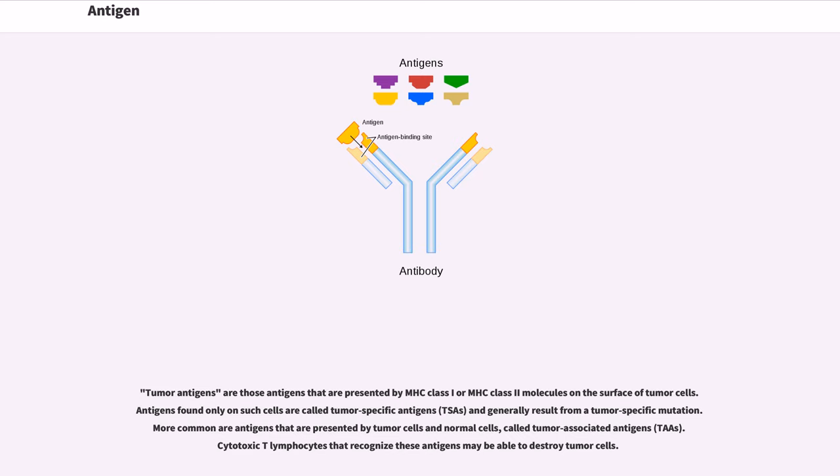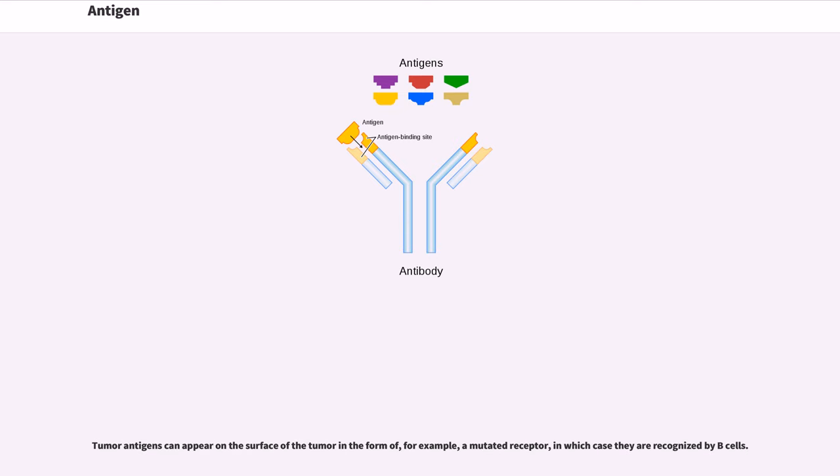Cytotoxic T lymphocytes that recognize these antigens may be able to destroy tumor cells. Tumor antigens can appear on the surface of the tumor in the form of, for example, a mutated receptor, in which case they are recognized by B cells.